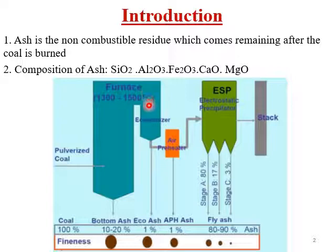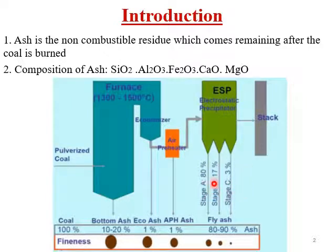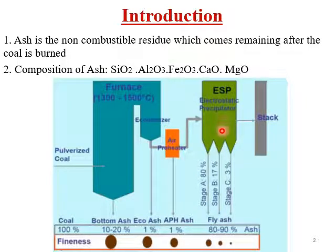First there is the furnace. In the furnace, the flue gas and fly ash travel together. The fly ash then goes to the electrostatic precipitator, also called ESP. The majority of the fly ash is collected there. This is a pollution control device that removes harmful particles from the gas.